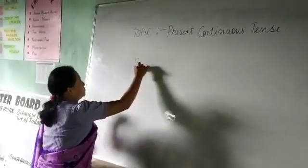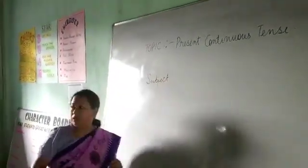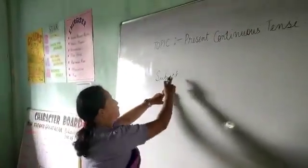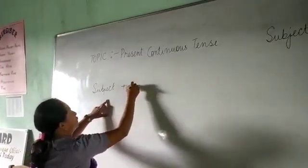First, you will have the subject. Subject, we all know, it's the doer of the action. Then after this subject, there will be a be verb.